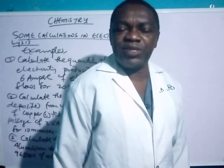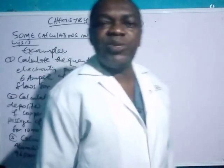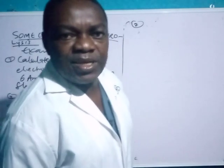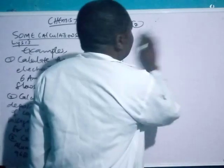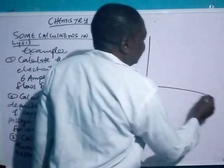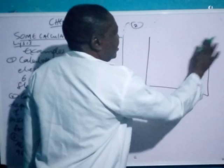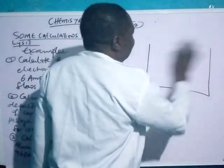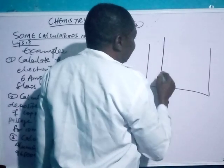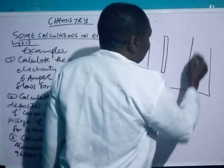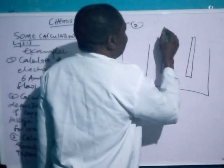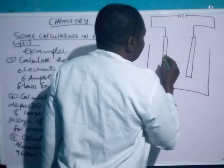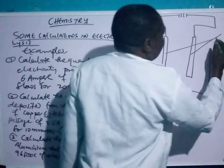Before you can carry out calculations in electrolysis, you have to know what electrolysis is all about. Using a simple diagram for analysis: in electrolysis you have what is called an electrolytic cell. An electrolytic cell is a cell in which electrical energy is converted into chemical energy. In an electrolytic cell you have the anode and the cathode, which are two electrodes connected to the battery, also called the DC supply.